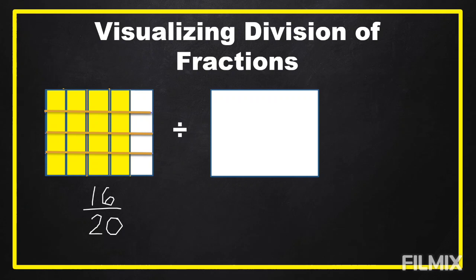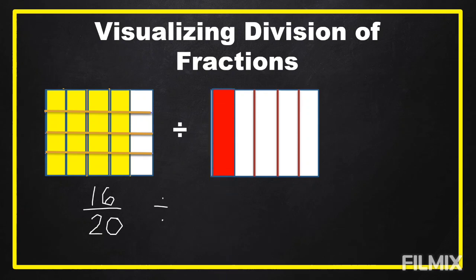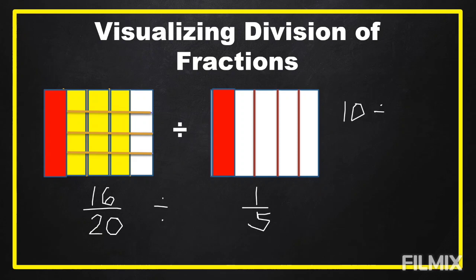We're going to divide this into our second figure. We're going to divide it into five equal parts and shade one part, so the second figure is equal to one fifth. Before we divide 16 over 20 by one fifth, let's try first an example using a whole number.